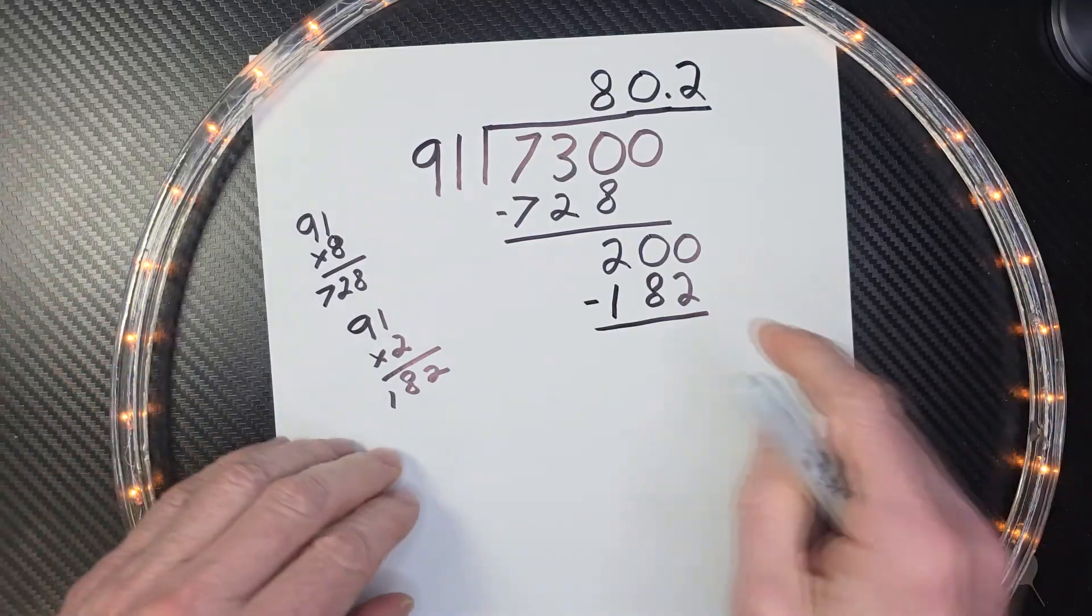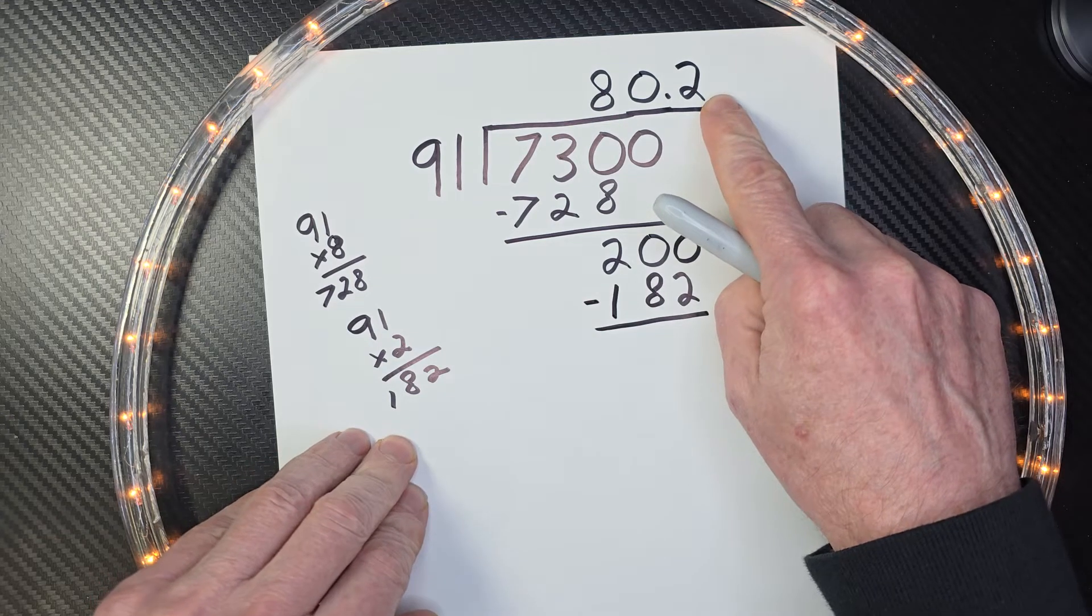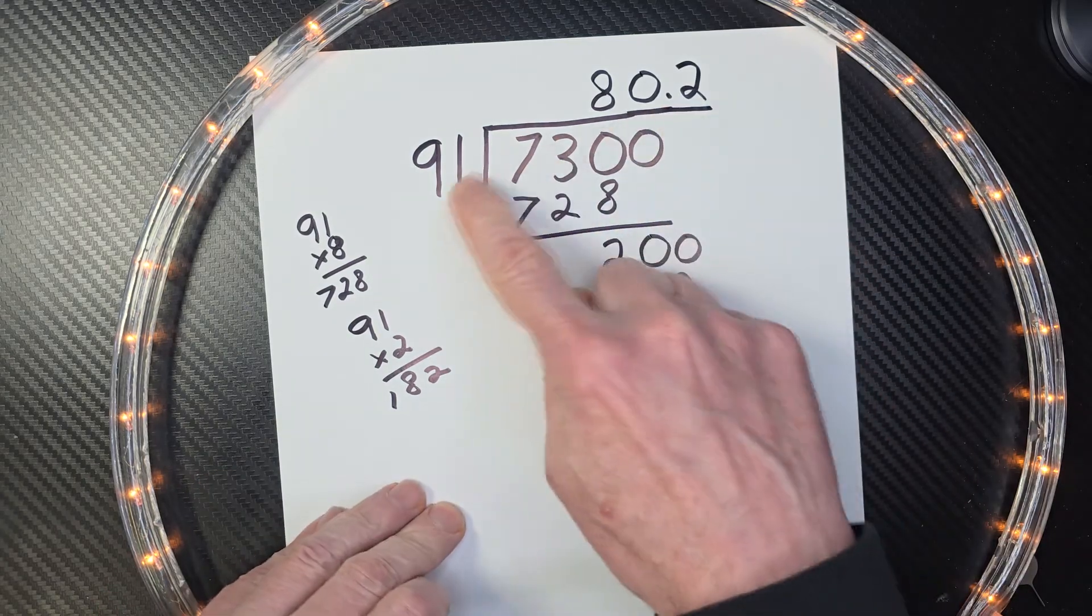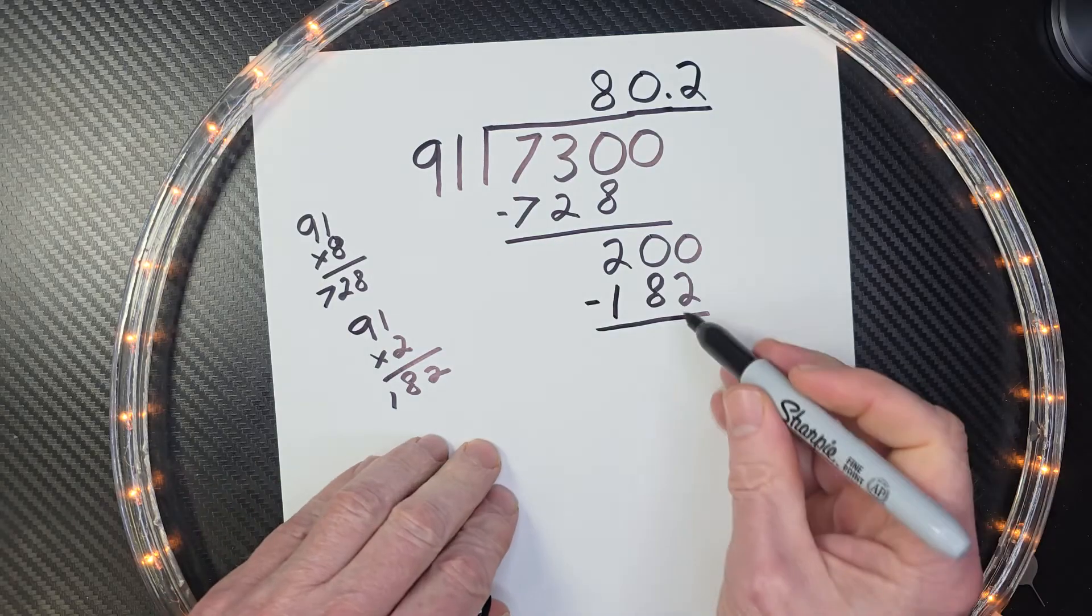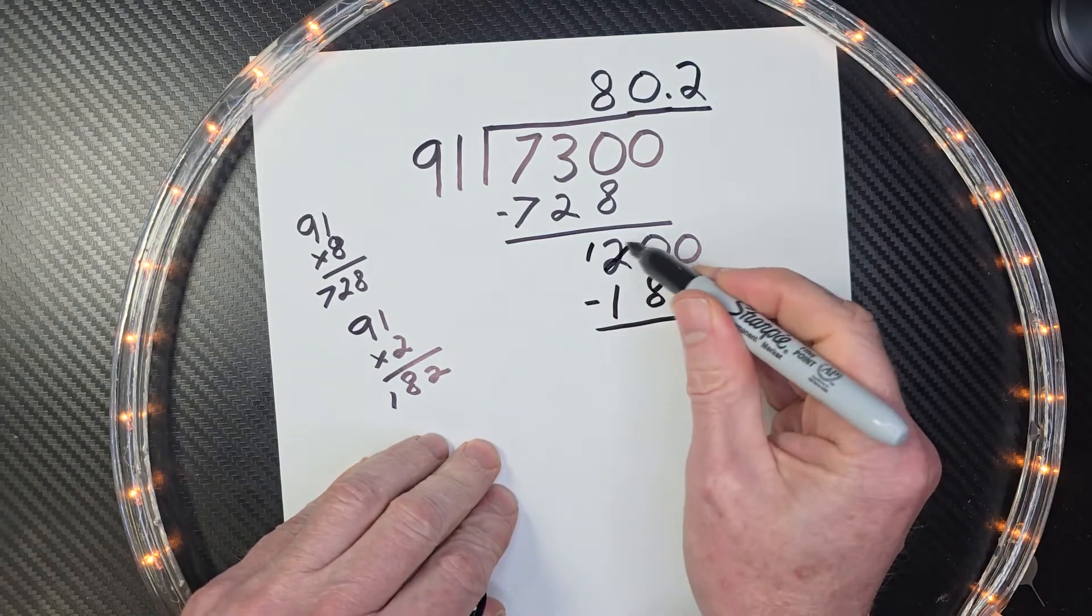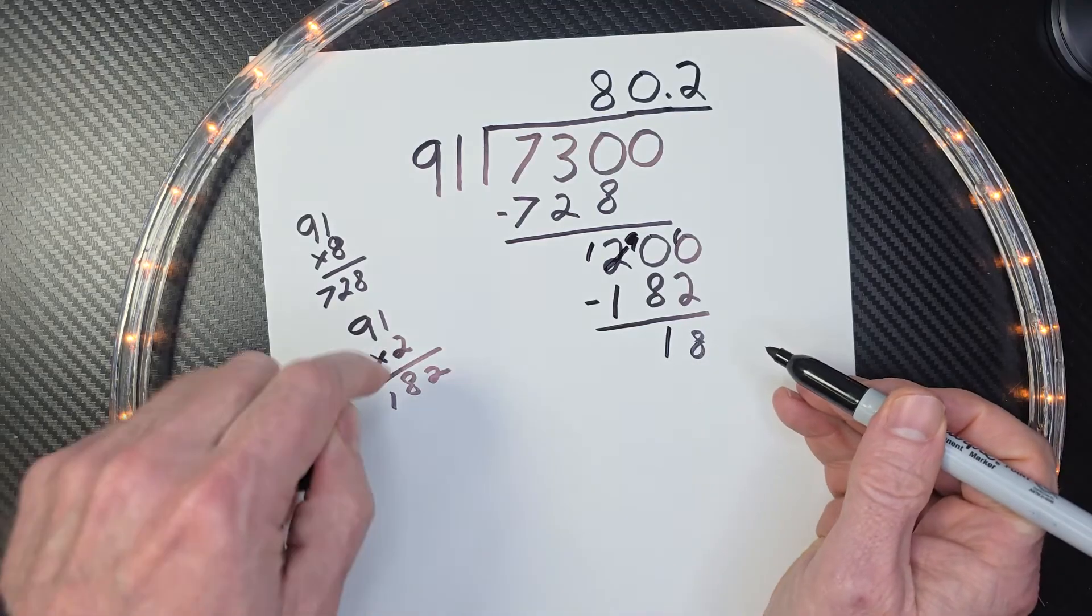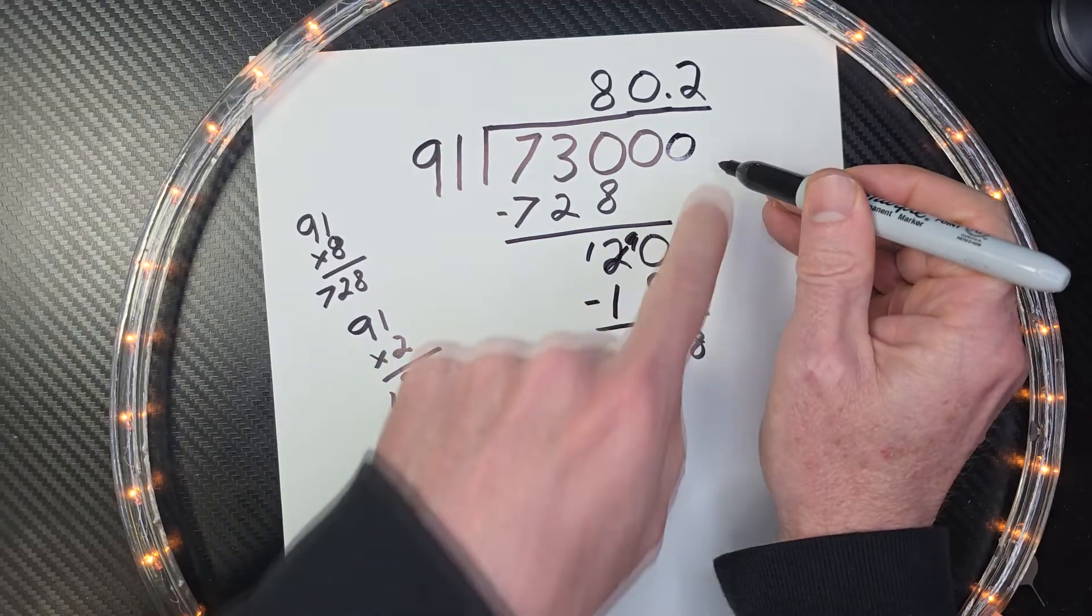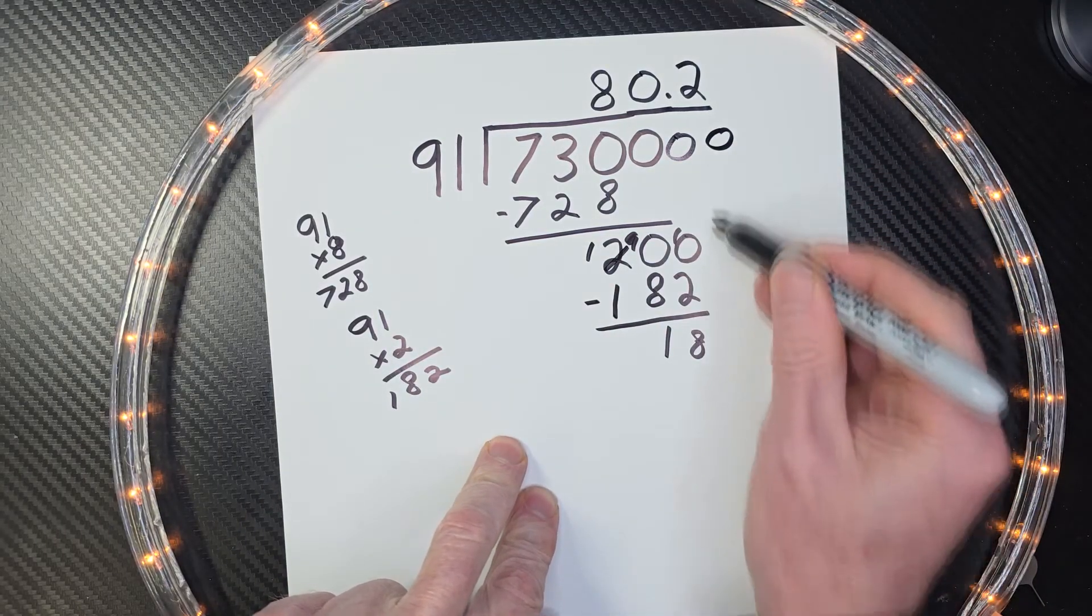Alright. Before I end the video, I just wanted to show you what number would go right here, if you want to find out what the second number past the decimal point is. So again, we did 2 times 91, which would be 182. Subtract that, and that is going to be 18. So I need to figure out, I'm going to bring down another zero right over here. I think I brought down that zero. So I'm going to bring down one more zero right over here.